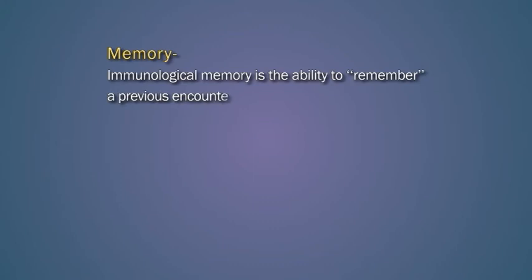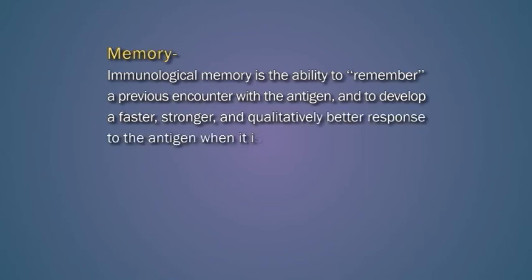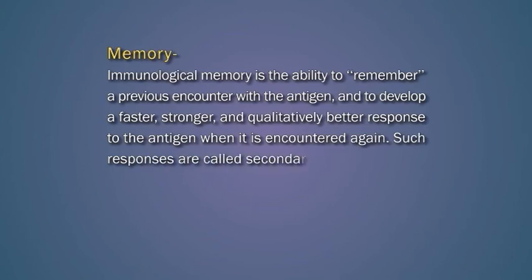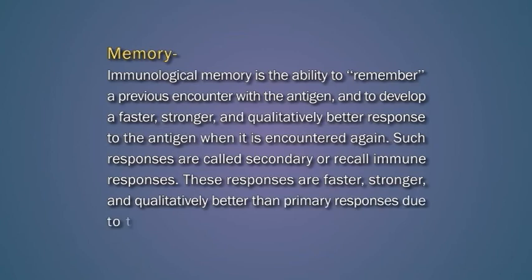The third feature is memory. Immunological memory is the ability to remember a previous encounter with the antigen and to develop a faster, stronger, and qualitatively better response to the antigen when it is encountered again. Such responses are called secondary or recall immune responses. These responses are faster, stronger, and qualitatively better than the primary response due to the fact that memory cells mediate them.